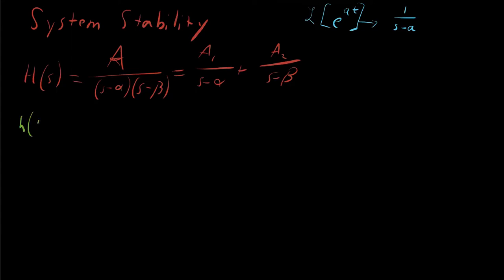We now have H of t is equal to, and A1 is just a constant, so we can pull it out, A1. And that leaves us with 1 over s minus alpha, and that's s minus A here, so that means e to the alpha t, plus A2 e to the beta t.